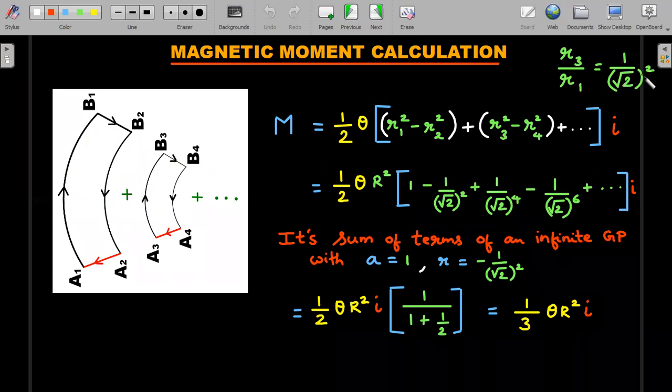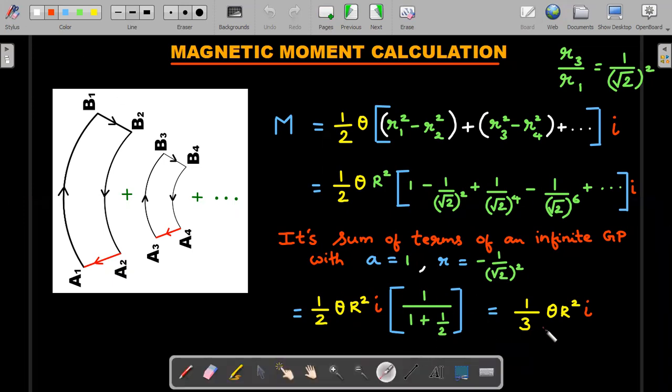You realize that r₂/r₁ is 1/√2, r₃/r₁ is (1/√2)², and so on. If I take r₁² out, which is given as capital R², these ratios become: the first term is 1, this would be (1/√2)², this term becomes (1/√2)⁴, and so forth. This is the sum of terms of an infinite GP with first term 1 and common ratio negative 1/2, given by a/(1-r).